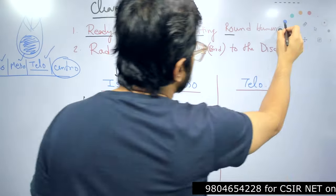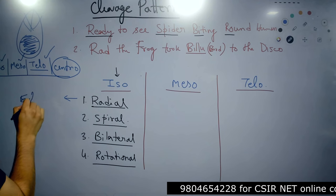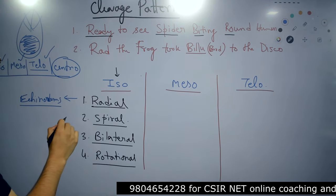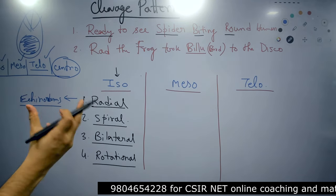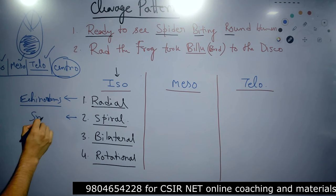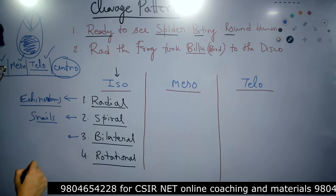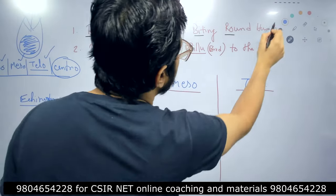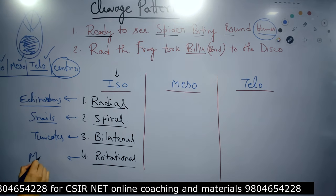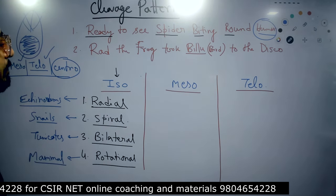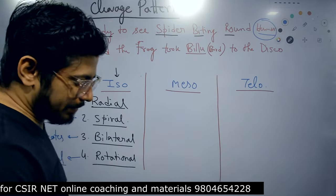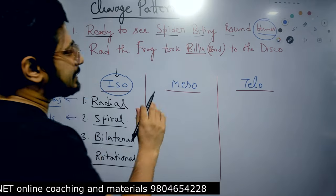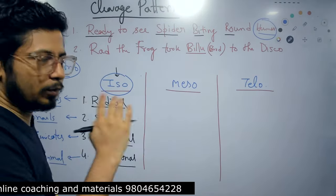Now the examples: radial cleavage example - echinoderms. Spiral cleavage - think of a spiral animal like a snail, so mollusks. Bilateral cleavage - tunicates. Rotational cleavage - 'round human,' human is a mammal, so rotational cleavage is visible in mammals. Rotational is very important because in mammals we have rotational cleavage, and mammals have an isolecithal egg.